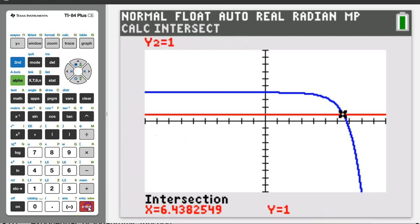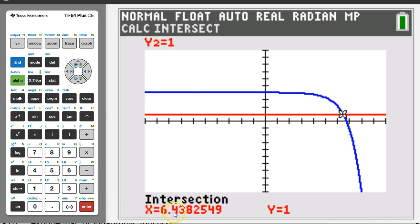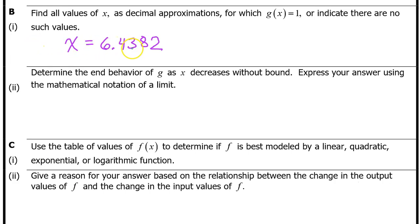Enter, enter, enter. And there it is, 6.4382. That's it for B part 1.